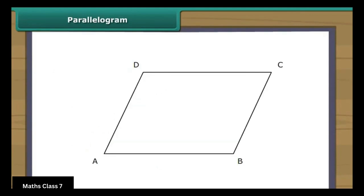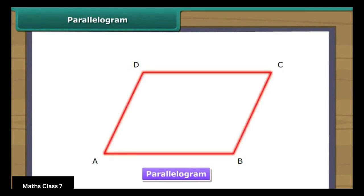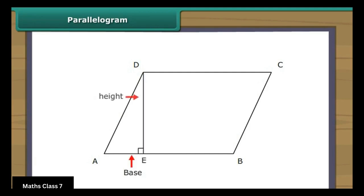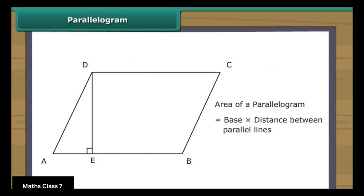Parallelogram. Students, see the following figure. Can you name the figure? It is a parallelogram. A parallelogram is a four-sided closed figure having opposite sides parallel to each other. Can we find the area of this figure? Yes, by using the formula for the area of a parallelogram. For this, we require the measures of the base and the distance between corresponding parallel sides. The area of a parallelogram is the product of its base and the distance between the parallel sides, that is, the height of the parallelogram.